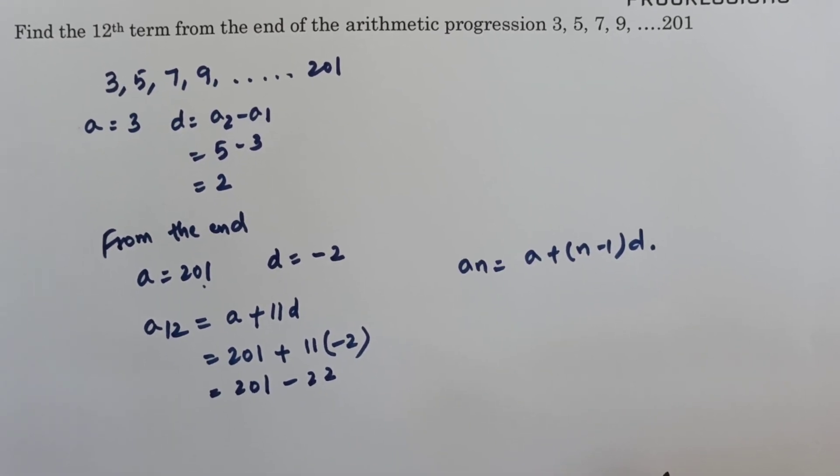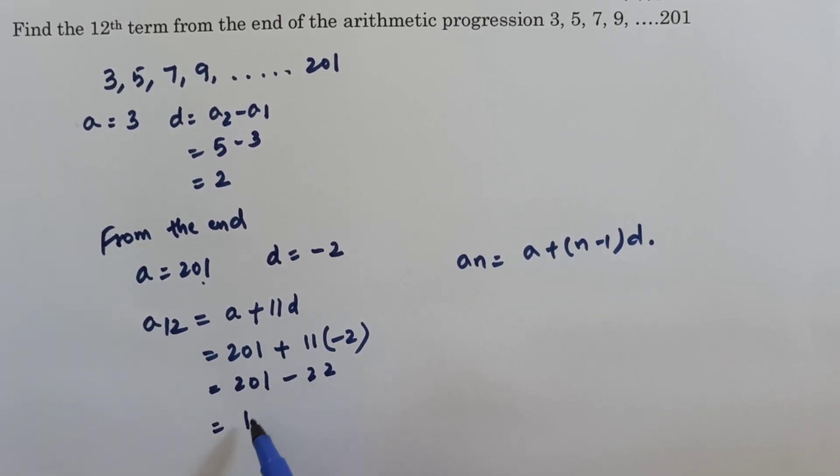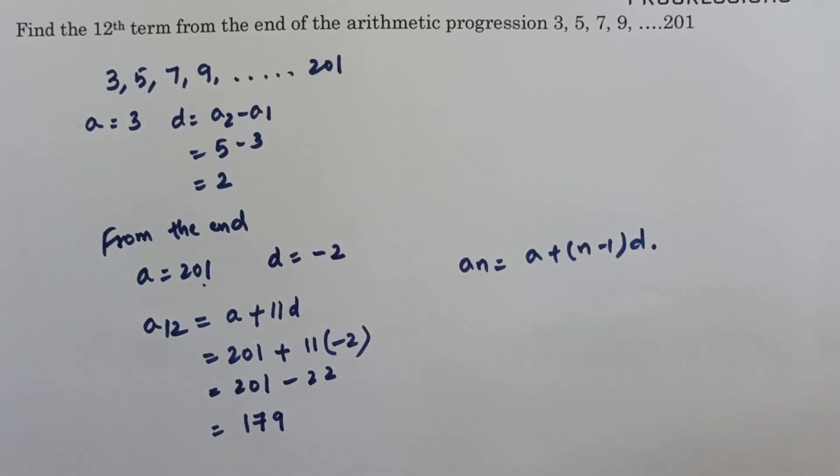So 201 minus 22, that equals 179. So the 12th term from the end is 179.